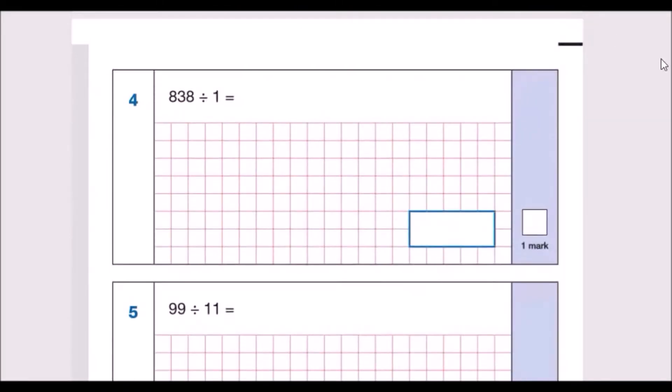Question 4: 838 divide by 1. This is, you don't even need to think, anything divide by 1 is itself, so 838. You're splitting for example 838 pies by one person, so he's obviously going to eat all them pies, so that's why it works like that.